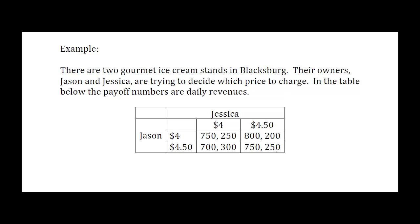When reading these matrices, the row player's payoff is always going to be the first number in the parentheses, and the column player's payoff is the second number in the parentheses. One of the ways students most frequently get confused when finding a Nash Equilibrium is getting the column player's payoff mixed up with the row player's payoff. So pay special attention to whether you're looking at the second payoff for the column player and the first payoff for the row player.